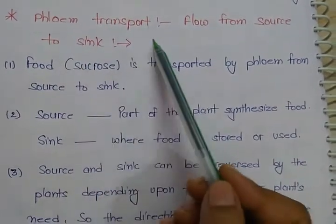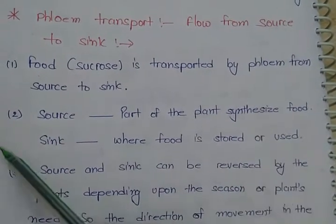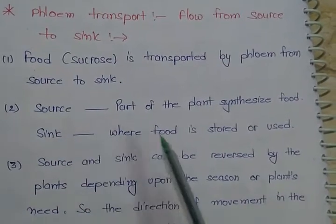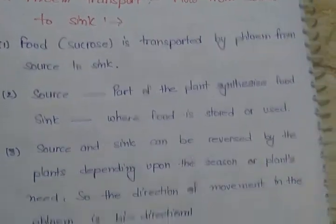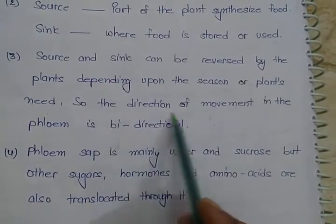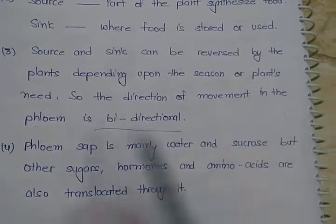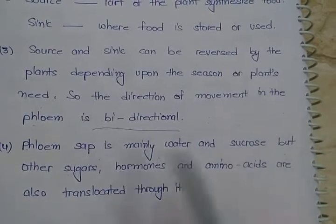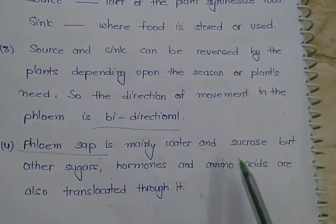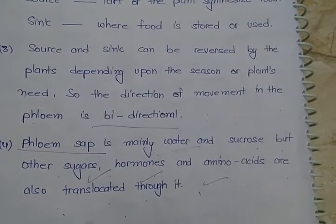Next topic is phloem transport — flow from source to sink. Food, mainly sucrose, is transported through phloem from source to sink. Source is where photosynthesis occurs and food is prepared; sink is where food is stored or used. Source and sink can change according to the season or plant need, which is why the direction of movement in the phloem is bi-directional, while in xylem movement is unidirectional. Phloem sap is mainly water and sucrose, but other sugars, hormones, and amino acids are also translocated through it.